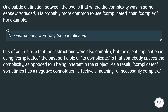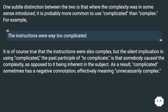One subtle distinction between the two is that where the complexity was in some sense introduced, it is probably more common to use complicated than complex. For example, the instructions were way too complicated. It is of course true that the instructions were also complex, but the silent implication in using "complicated" — the past participle of "to complicate" — is that somebody caused the complexity, as opposed to it being inherent in the subject.